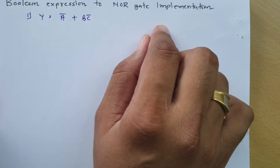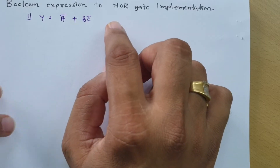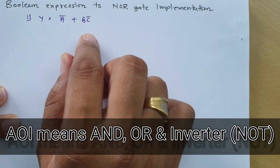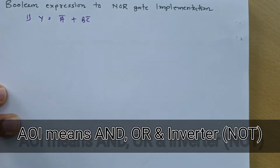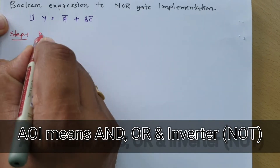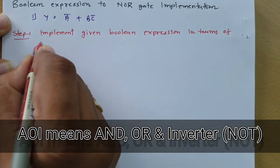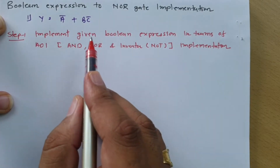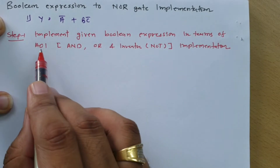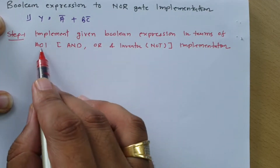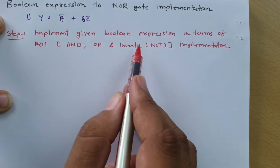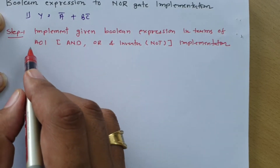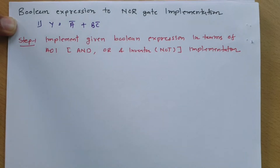The first step is to make this Boolean expression in AOI form, where AOI is AND-OR-Inverter implementation. Our agenda is to implement the given Boolean expression in AOI form where A is AND, O is OR, and I is inverter. So first we will implement this given Boolean expression in AOI form.